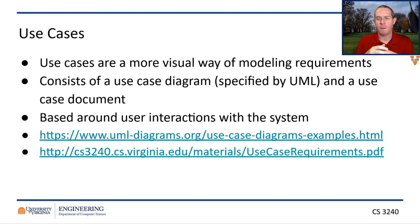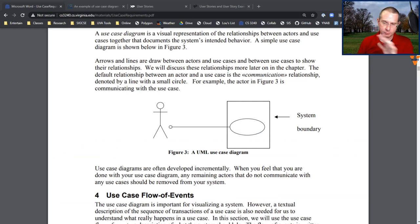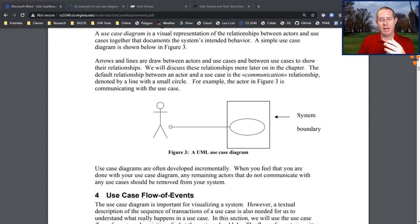There are two links here. The one I want to look at first is actually the second link — a textbook written by Laurie Williams at North Carolina State University, who is very well known in software engineering, particularly in agile methods. Full disclosure: she was my PhD advisor and she's a wonderful person. This is part of the textbook she wrote, and it gives a quick example of what a UML use case looks like.